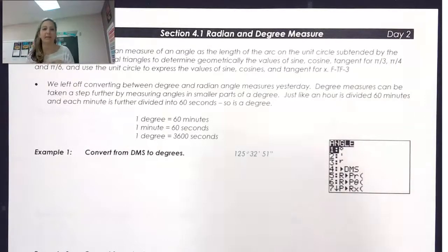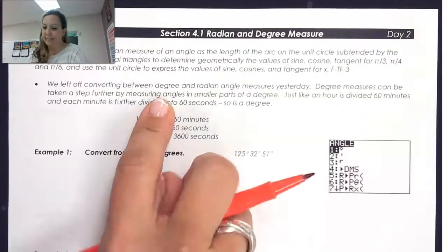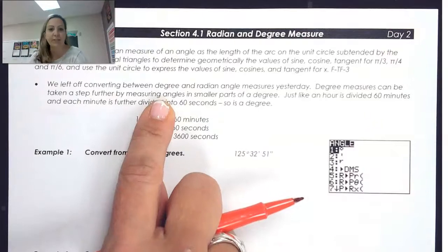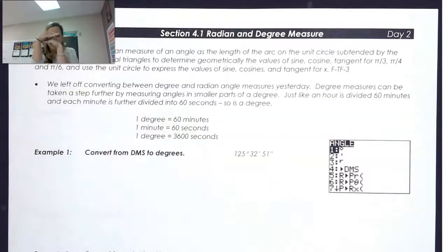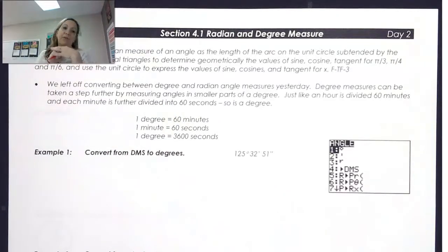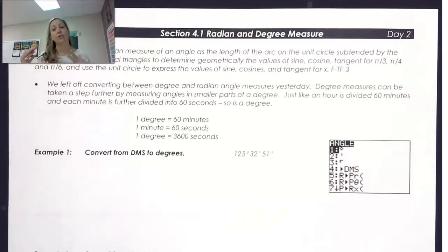Today we're going to be looking at the second part of 4.1, which is on radian and degree measure. Last time we left off converting between degree and radian measures. Even though degrees are super tiny, they can be taken a step further by measuring angles in even smaller parts of a degree. Just like an hour is divided into 60 minutes and each minute into 60 seconds, a degree can have the same qualities.